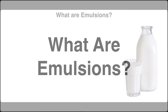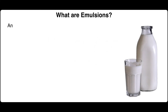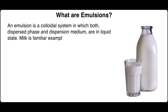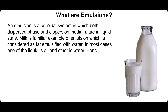What are emulsions? An emulsion is a colloidal system in which both the dispersed phase and dispersion medium are in liquid state. Milk is a familiar example of emulsion, which is considered as fat emulsified with water. In most cases, one of the liquids is oil and the other is water.